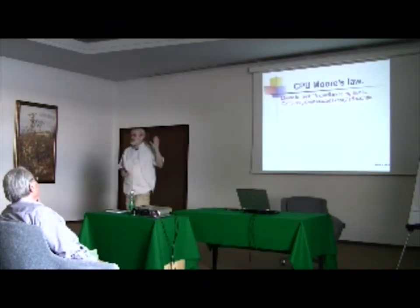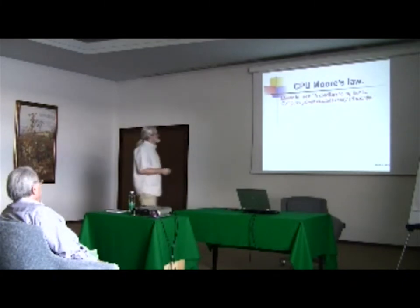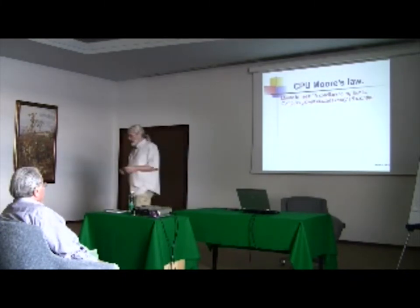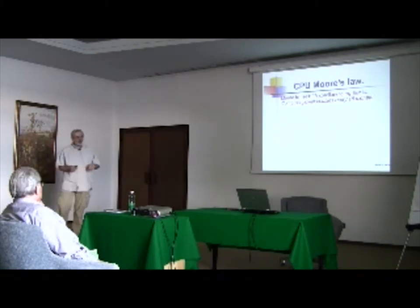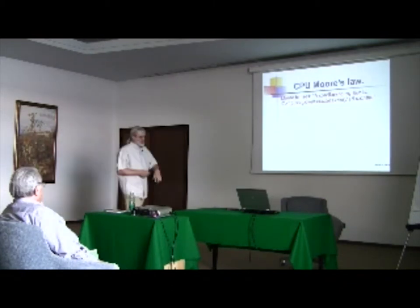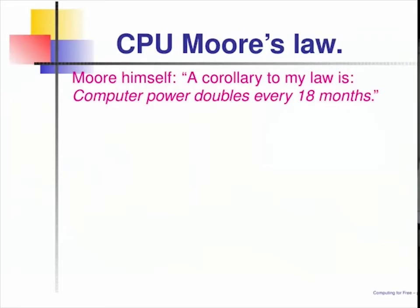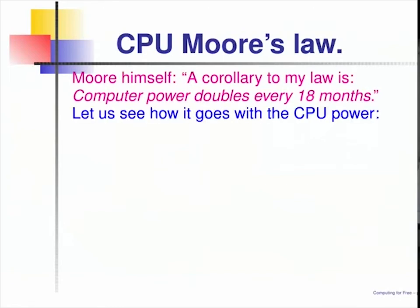I'll start with these advertising things first. We know that Moore has said a lot of things. First, everything should double within a year, then two years, and then he changed that to 18 months, and he accepted that. Let us see how it goes today with some aspects of his law — the speed, the clock speed. We see first it turned from exponential to linear.